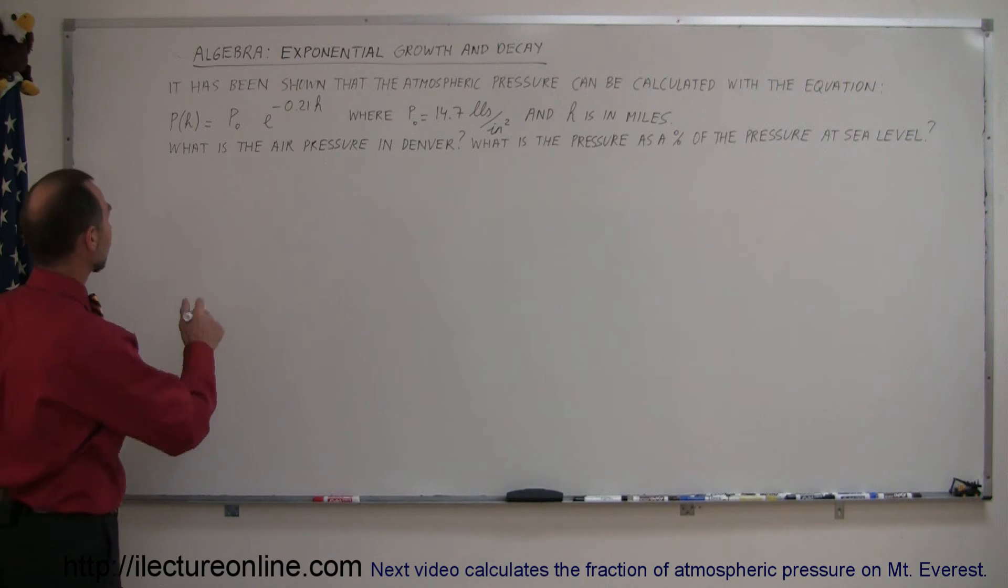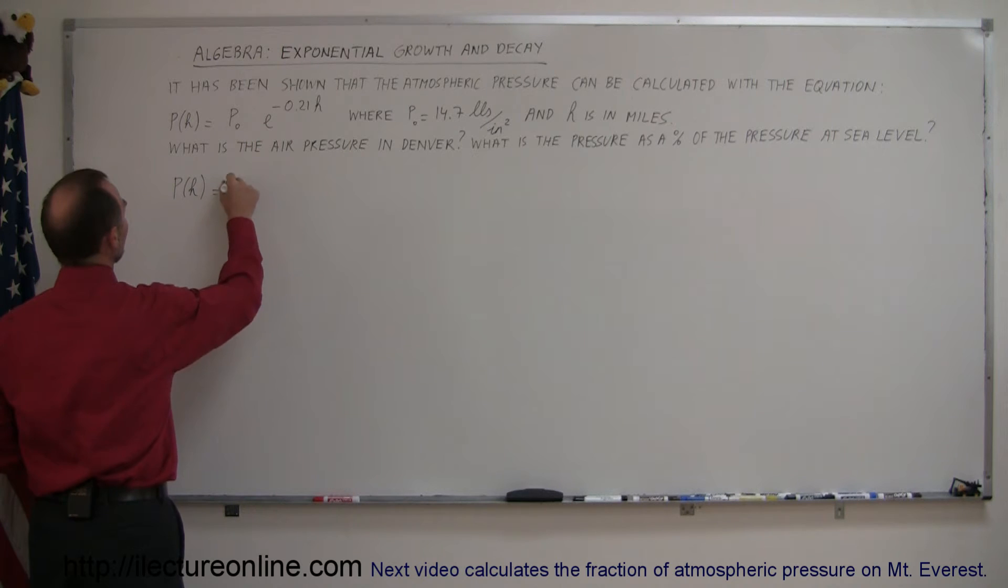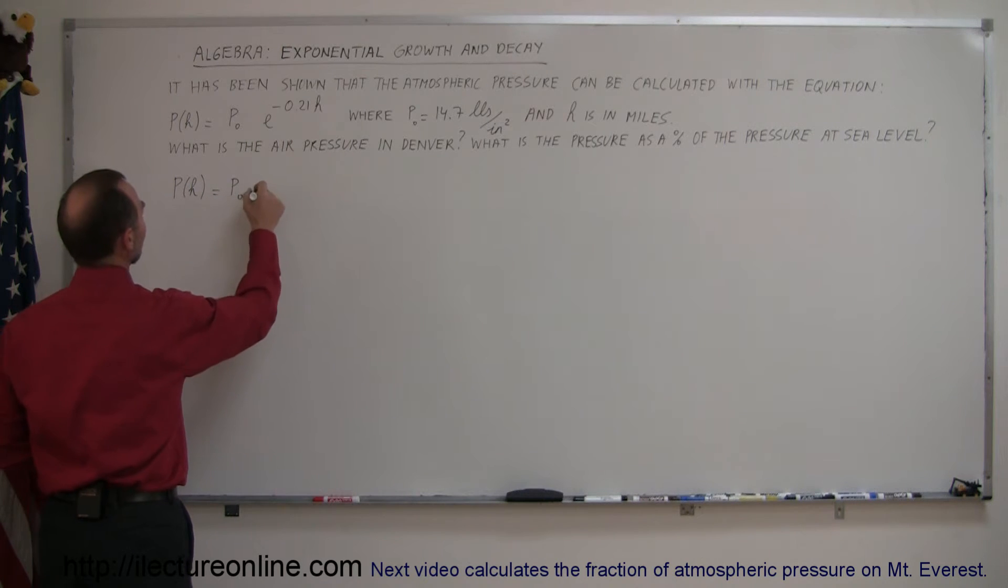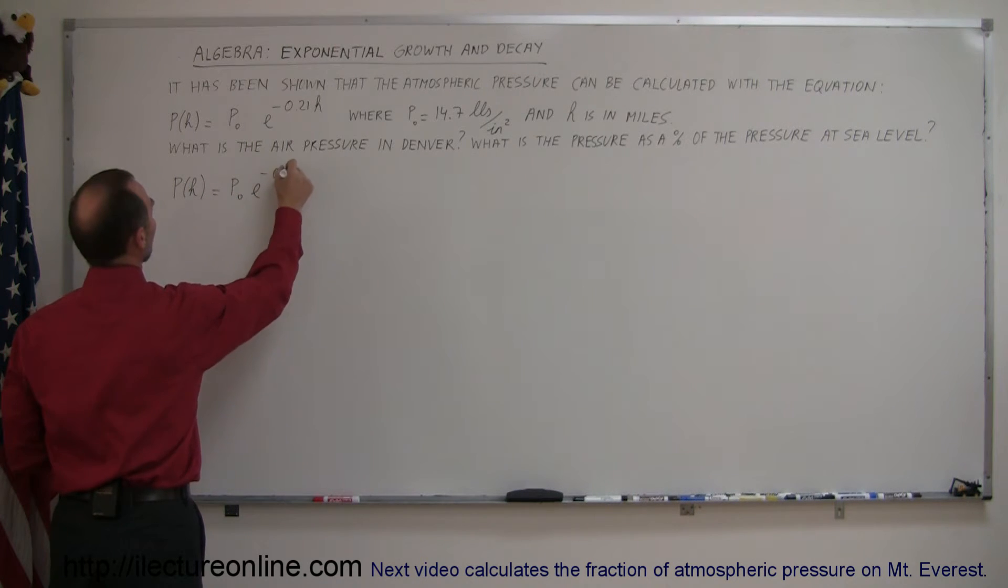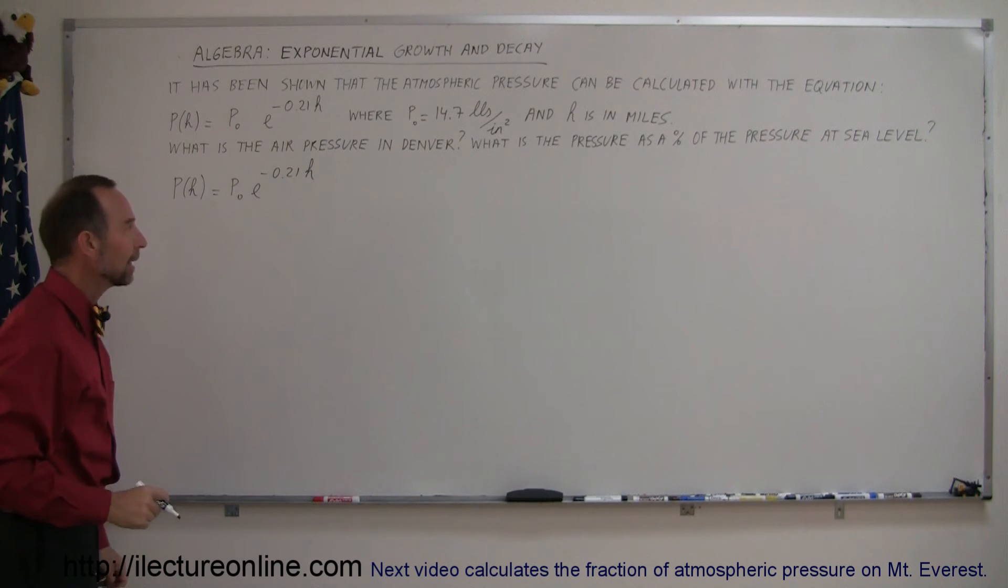All right, so again let's write down our equation. The pressure as a function of height above sea level is equal to the original pressure at sea level times e to the minus 0.21 h, h being the elevation or height in miles.